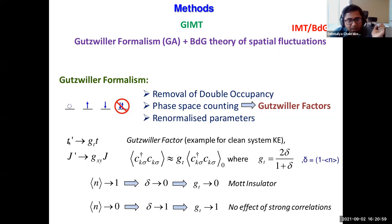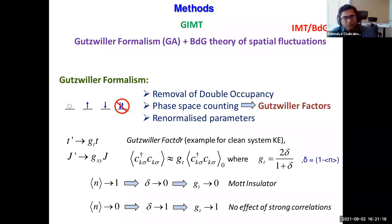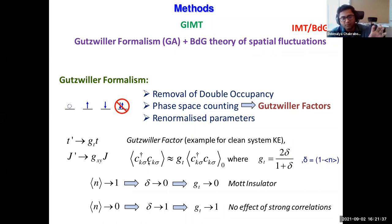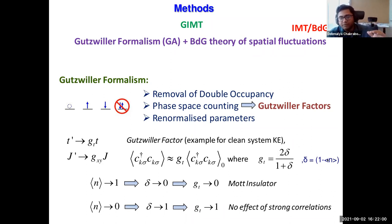These Gutzwiller factors can be calculated by phase-space counting arguments. For example, looking at the Gutzwiller factor for hopping: one expectation value has no zero while the other has a zero — so we are mapping from a projected space with no double occupancy to a space where double occupancies are allowed, taking care of strong correlations through these factors. For the homogeneous case, g_t = 2δ/(1+δ), where δ is the average hole doping and n is the electron density.